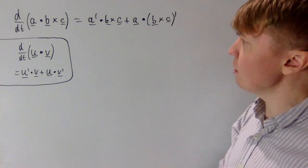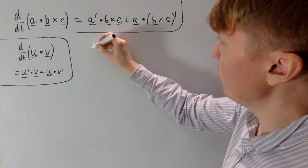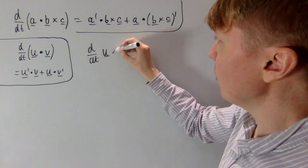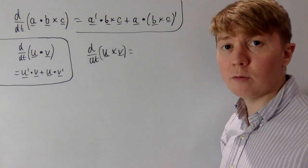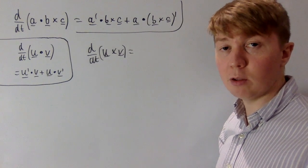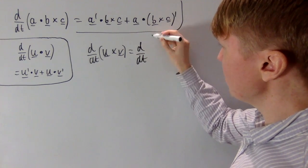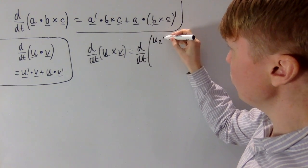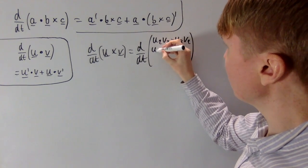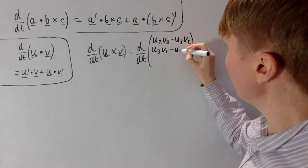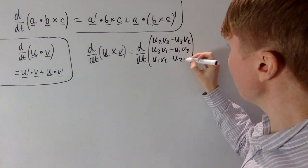Just as before, we introduce two vectors u and v to examine differentiating their cross product. Writing u = (u1, u2, u3) and v = (v1, v2, v3), all functions of t, we use the definition of the cross product. This gives entries: (u2v3 − u3v2), (u3v1 − u1v3), and (u1v2 − u2v1).